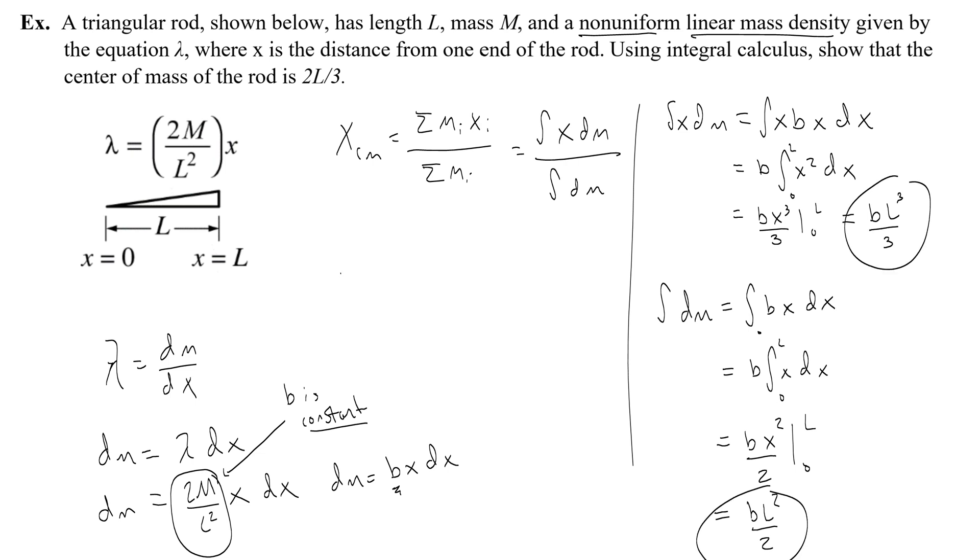To get the center of mass, I'm going to put b l cubed over 3. That's the top. And then rather than trying to do one on the top, one on the bottom, I'm just going to multiply by the inverse, 2 over b l squared. And what do you know? That constant b, this whole thing, goes away. And my l squared cancels out 2 of my l cubes. So I get 2 times l over 3, which is exactly what it wanted me to prove.